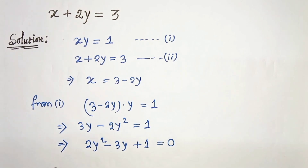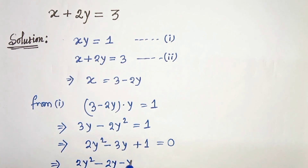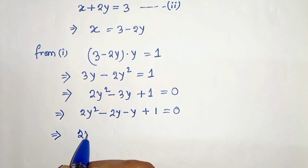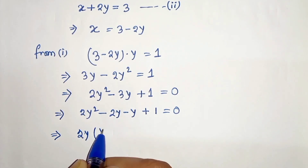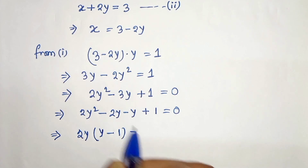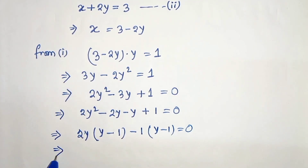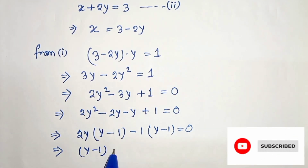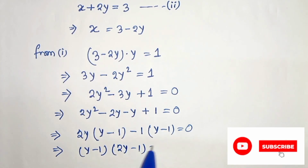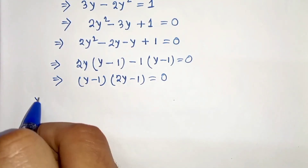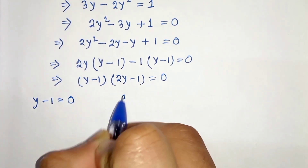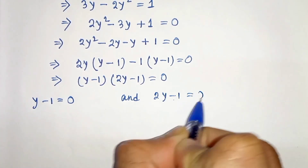Now we have to factorize this. We can write 2y² minus 2y minus y plus 1 equals 0. Taking 2y common from the first two terms, we get 2y(y minus 1) minus 1(y minus 1) equals 0. Taking (y minus 1) common, we get (y minus 1)(2y minus 1) equals 0.